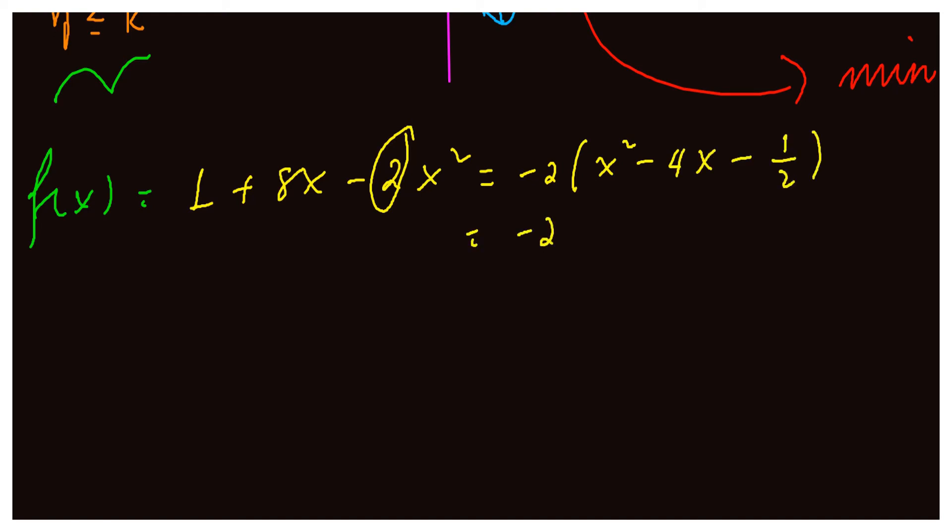So this is equal to, what we do, we will complete the square for this function. We will have this in the form of sum bracket to the power of two, completing the square.